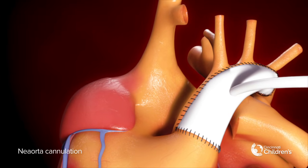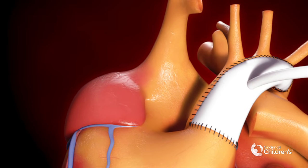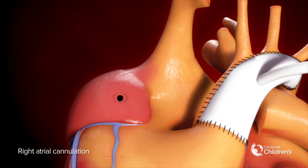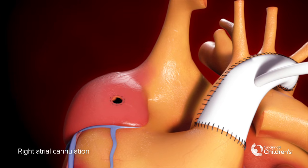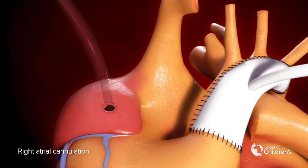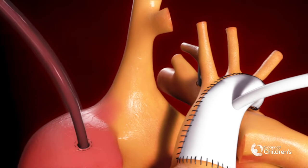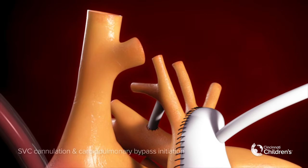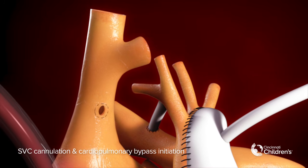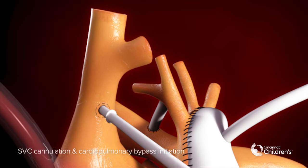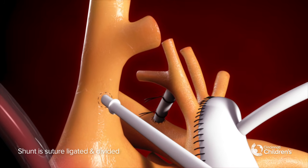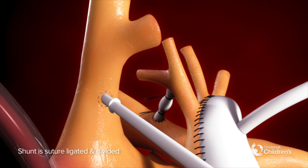Neo aortic cannulation, right atrial cannulation, SVC cannulation and cardiopulmonary bypass are initiated. The BT shunt is then suture ligated and divided.